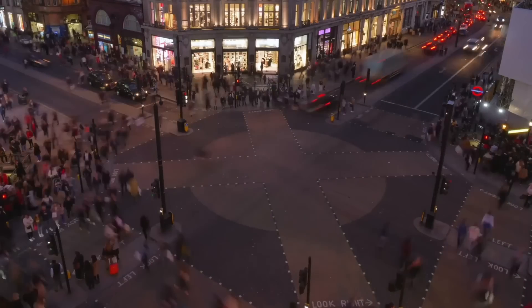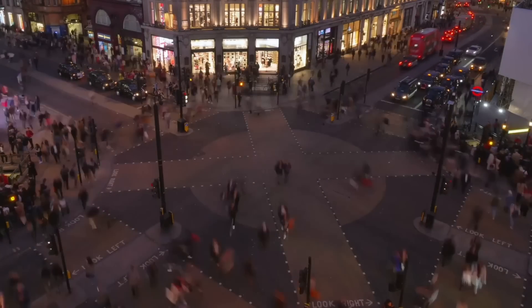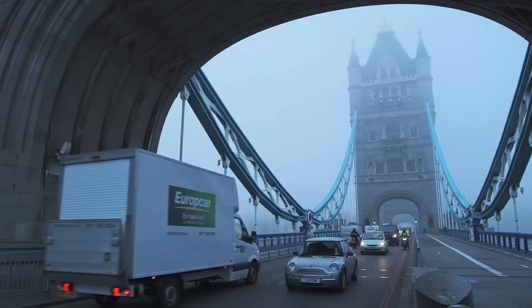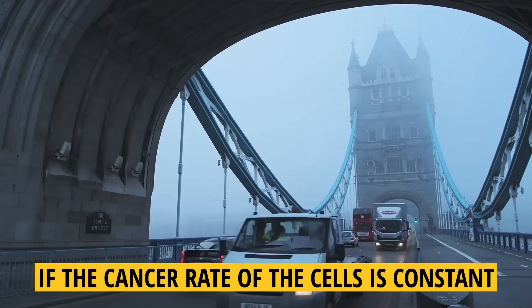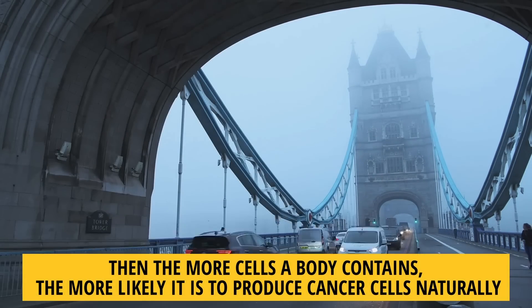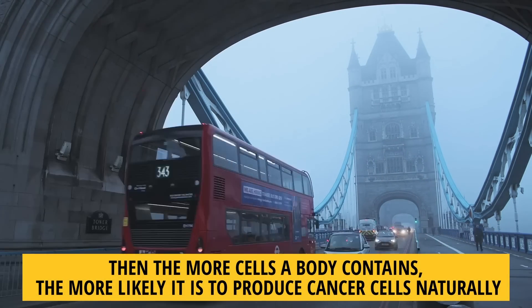The same survey was conducted on dogs, showing the same results. The proportionality may explain by the correlation between the size of the body and the number of cells. If the cancer rate of the cells is constant, then the more cells a body contains, the more likely it is to produce cancer cells naturally.